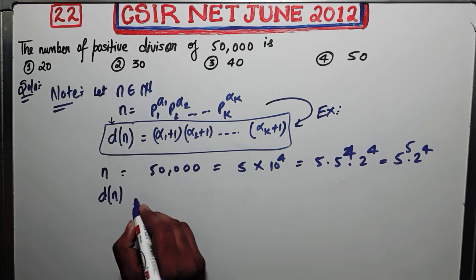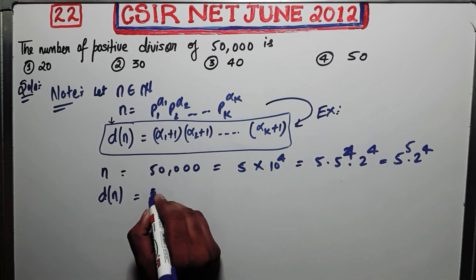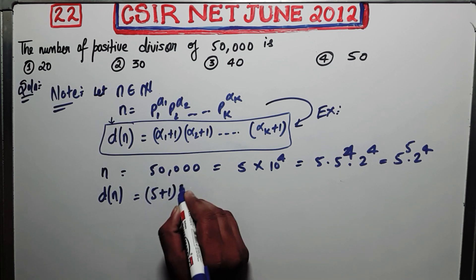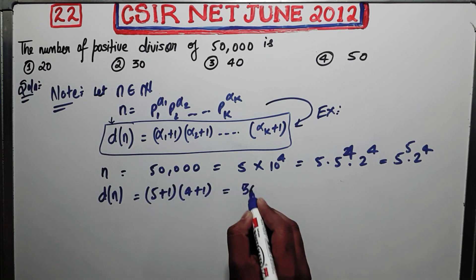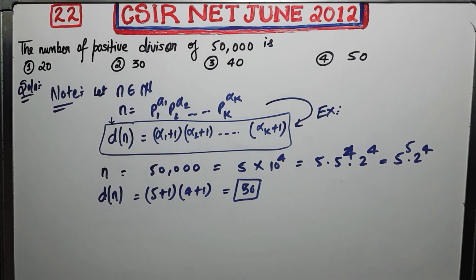You can use the previous argument. The previous argument says D(n) will be given by (5+1) × (4+1). So this is 6 × 5 that means 30. So that's the correct answer. So this is a very easy question by just remembering this formula.